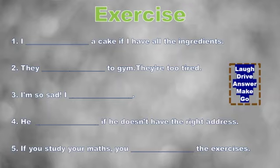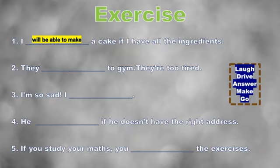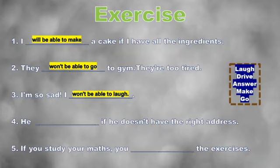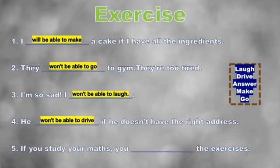Number one: 'I will be able to make a cake if I have all the ingredients' — positive. Number two: 'They won't be able to go to the gym because they are too tired.' Number three: 'I'm so sad, I won't be able to laugh.' Number four: 'He won't be able to drive if he doesn't have the right address.' Number five: 'If you study your maths, you will be able to answer the exercises.'